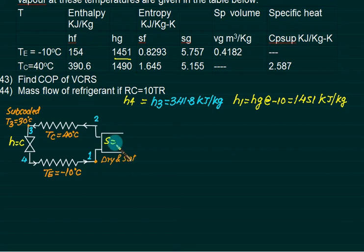First of all, we will find out S1. S1 is at dry and saturated condition. For dry and saturated, it is Sg at minus 10 temperature. So come to the table at minus 10, see Sg value, it is 5.757.